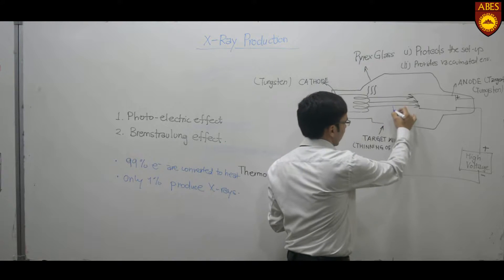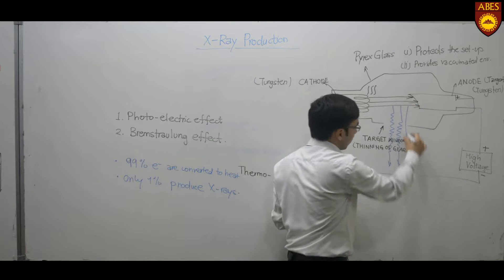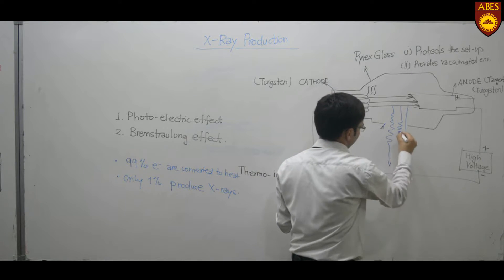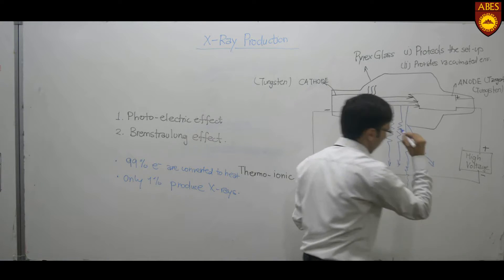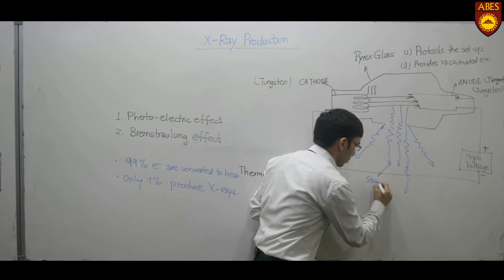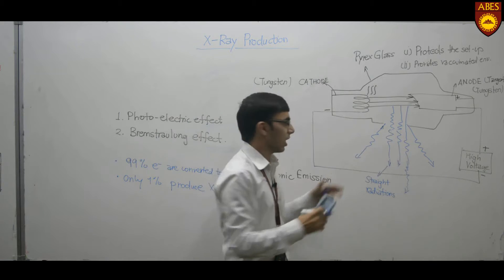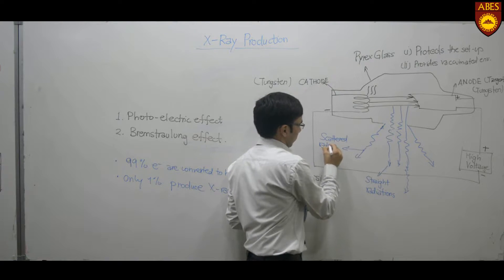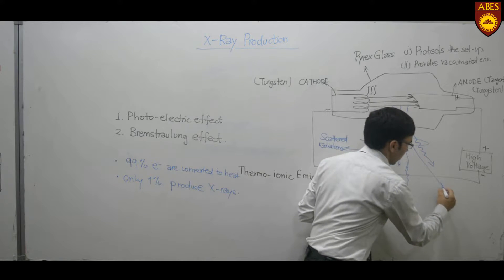When X-rays are produced, they move from the target window towards the patient or test specimen. The radiations coming out straight are called straight radiations, and the radiations coming out of the edges are called scattered radiations. This whole lot is called the total energy radiations.